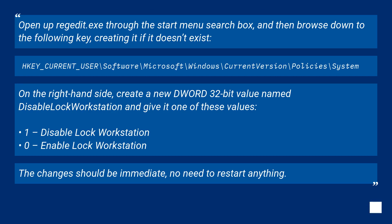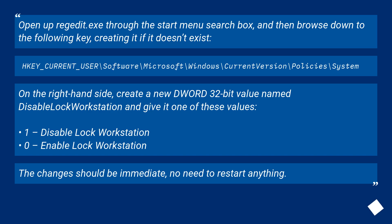HKEY_CURRENT_USER\Software\Microsoft\Windows\CurrentVersion\Policies\System. On the right-hand side, create a new DWORD 32-bit value named DisableLockWorkstation and give it one of these values: 1 to disable lock workstation, or 0 to enable lock workstation. The changes should be immediate — no need to restart anything.